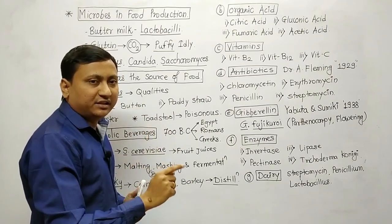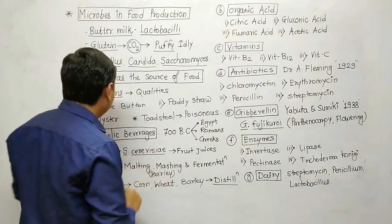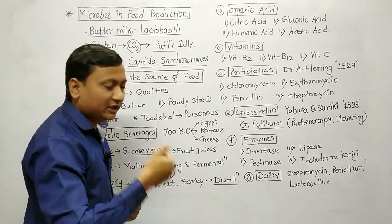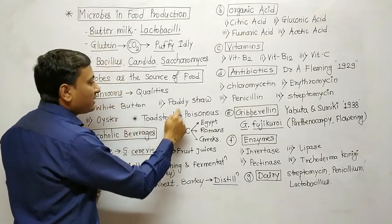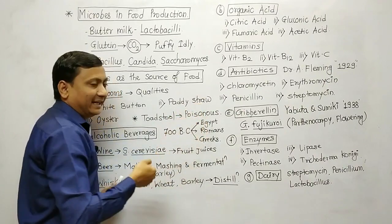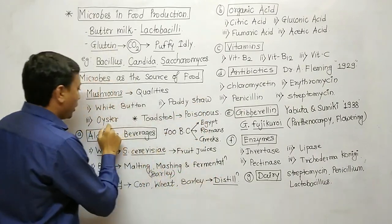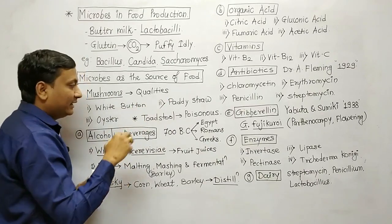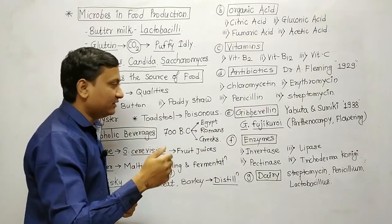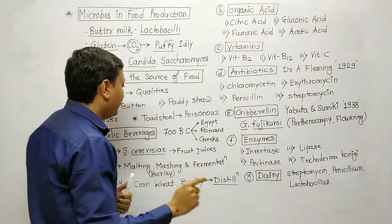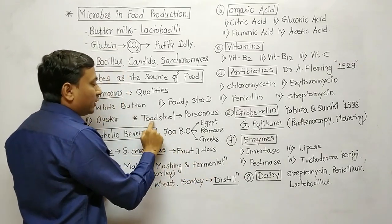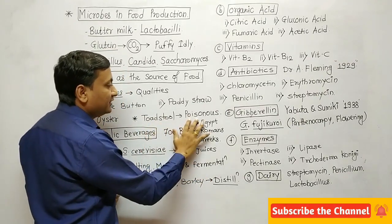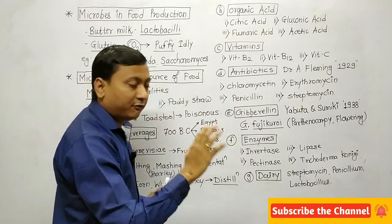Questions on this topic may be expected in MSTCT. First is white button mushroom — that is Agaricus bisporus. Second is paddy straw mushroom — that is Volvariella volvacea. Third is oyster mushroom — that is Pleurotus florida. These three biological names you must learn. If you have a toadstool name of mushroom, it is non-edible because it is a poisonous kind of mushroom.